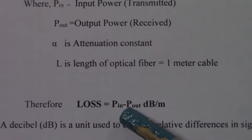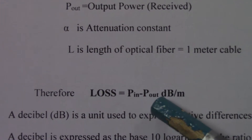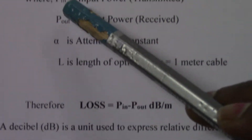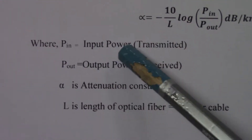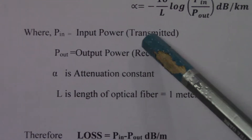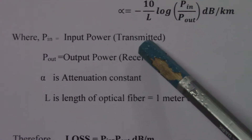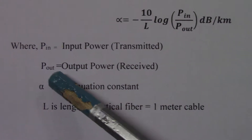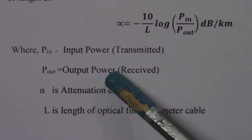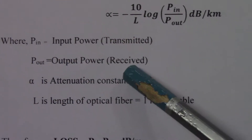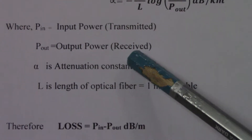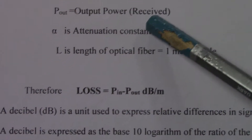In this formula, what is P_in and P_out? P_in is the input power — the light which is transmitted through the optical fiber. P_out is the output power — the light which is received from the optical fiber.